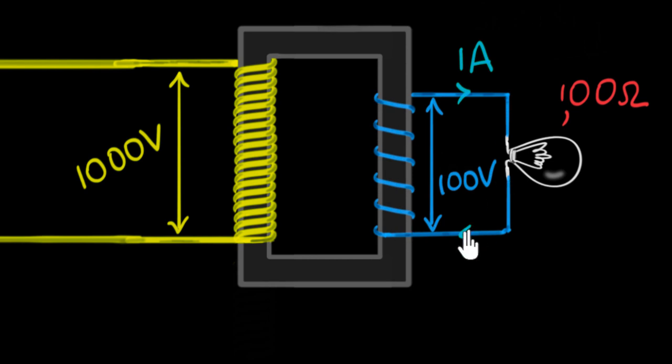So it's an alternating current flowing over here. But now the question that I want to ask you is how much current do you think will flow here? That's an interesting question because this is a different circuit altogether. How do we figure that out?